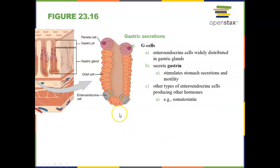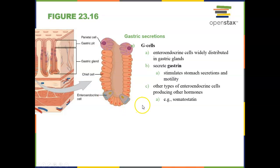Finally, G cells are endocrine cells that secrete a hormone called gastrin. Gastrin stimulates stomach secretions and stomach motility.